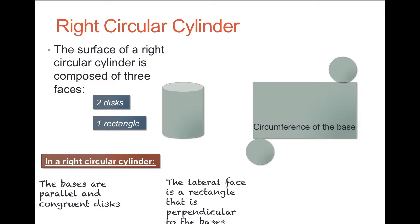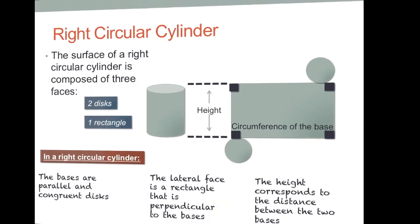In a right circular cylinder, the bases are parallel and the discs are congruent. The lateral face is a rectangle that is perpendicular to the bases. And the height corresponds to the distance between the two bases. So that's the height, the circumference of the base, and you have two bases in the form of circles.